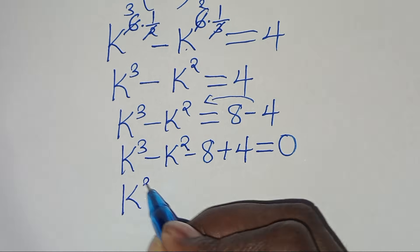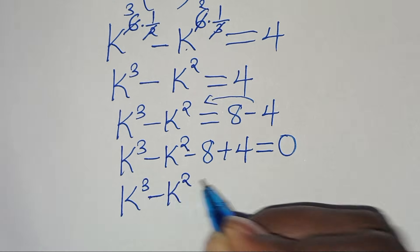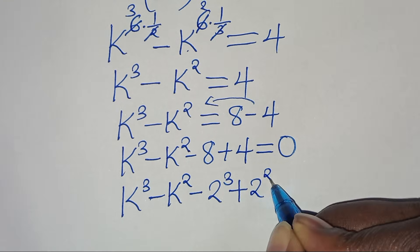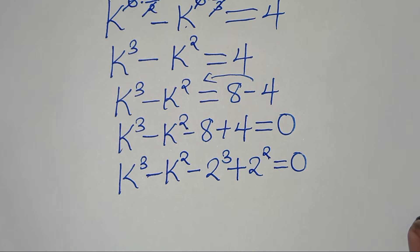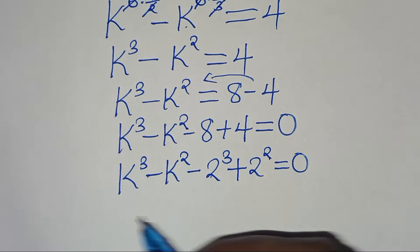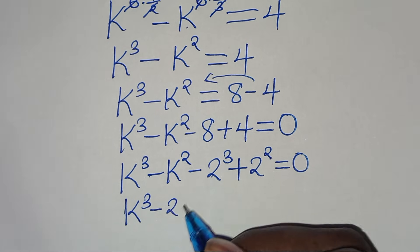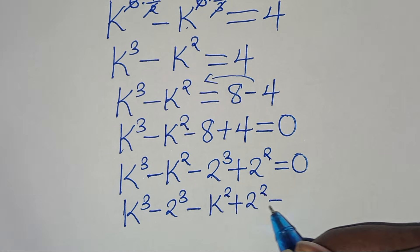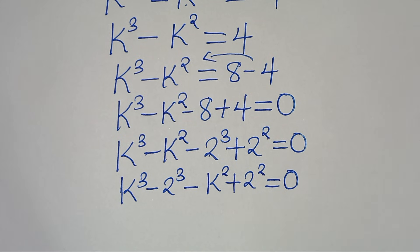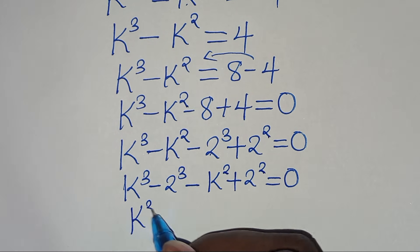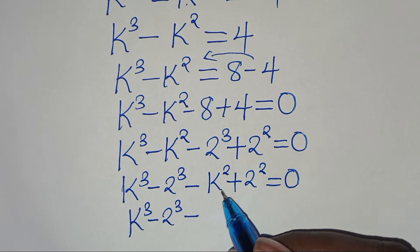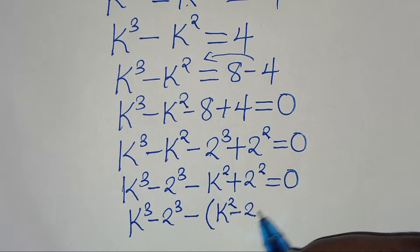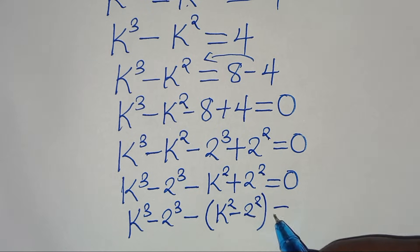Now, we have k to the power of 3, subtract k to the power of 2, subtract 8 — which is 2 to the power of 3 — then plus 4, which is 2 to the power of 2, equal to 0. Here we have k to the power of 3 minus 2 to the power of 3, then subtract k to the power of 2 plus 2 to the power of 2, equal to 0. So we can write this as k to the power of 3 minus 2 to the power of 3, minus the quantity k to the power of 2 minus 2 to the power of 2, equal to 0.